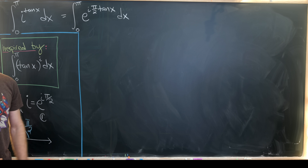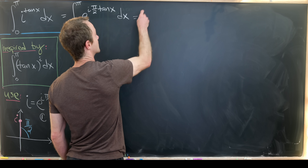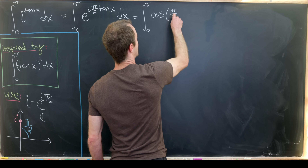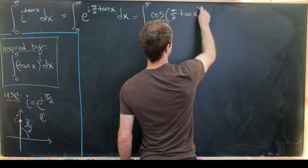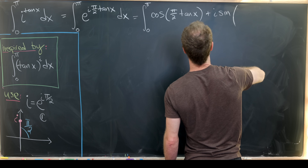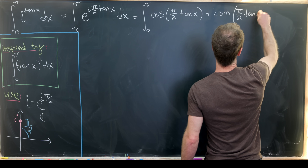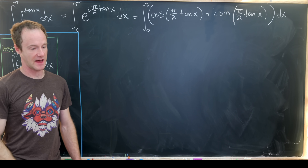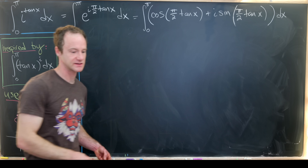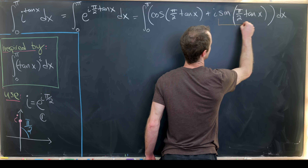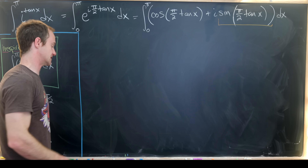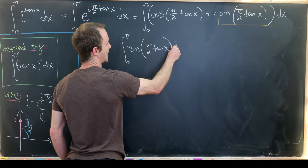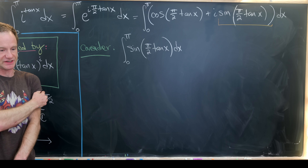Now we apply Euler's formula, giving us the integral from 0 to π of cos(π/2 · tan x) + i · sin(π/2 · tan x) dx. Before handling this whole integral, let's isolate and examine the portion involving the sine: the integral from 0 to π of sin(π/2 · tan x) dx.